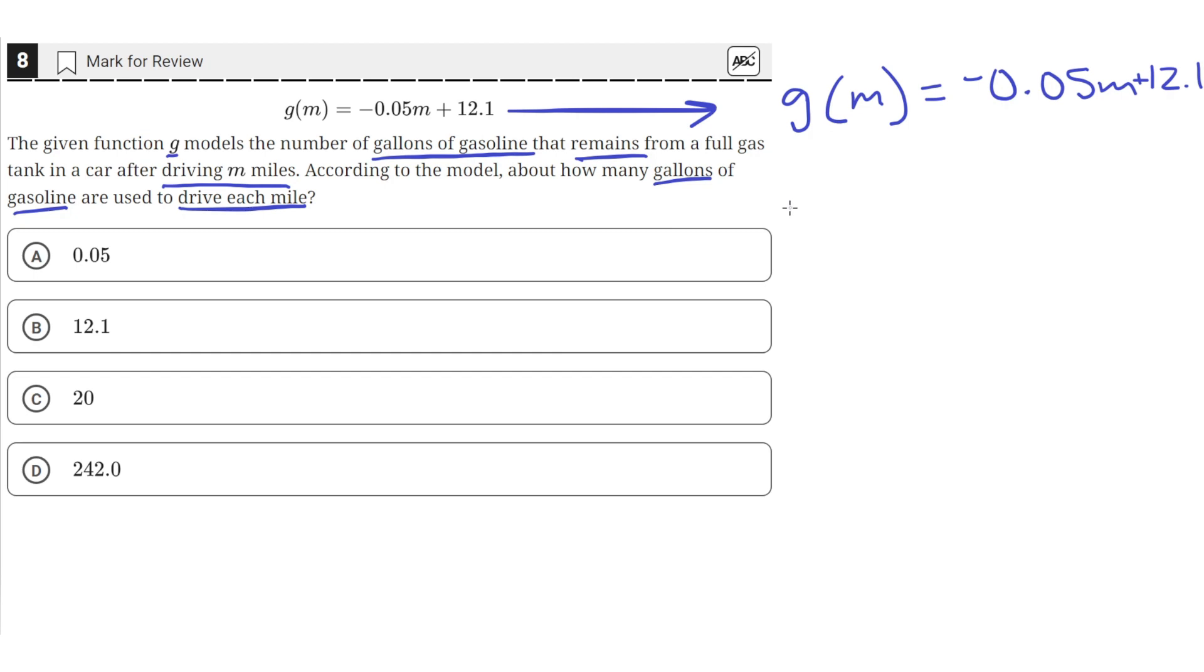So let's find out how much gallons of gasoline are left when we drive zero miles, so g of zero. That'll just be negative 0.05 times zero miles plus 12.1. Zero times anything is zero, so this just equals 12.1. So there's 12.1 gallons of gas left after zero miles.